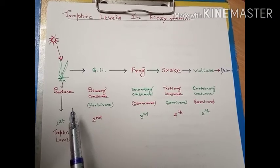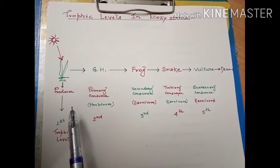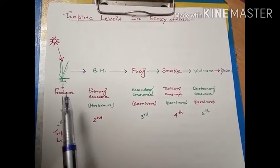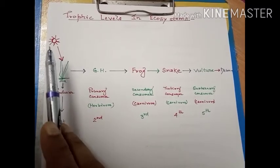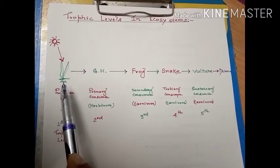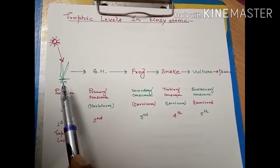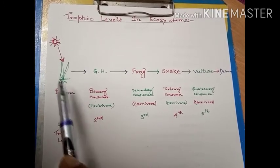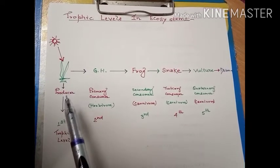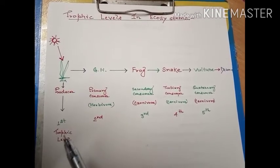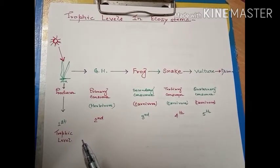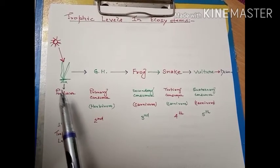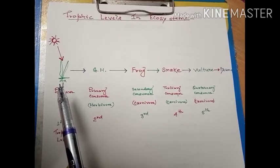Thus it makes nutrients available for the growth and development of the next generation of producers. First of all, the solar energy is trapped by green plants, and the green plants utilize solar energy to reduce carbon dioxide. The green plants photosynthesize and prepare their food in the presence of sunlight, reducing carbon dioxide to carbohydrates, preparing food by utilizing the abiotic substances present within the environment.